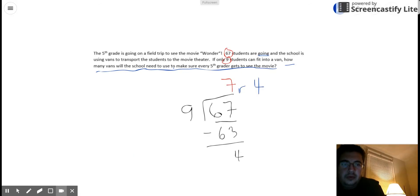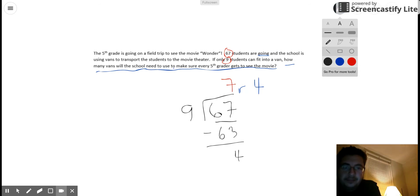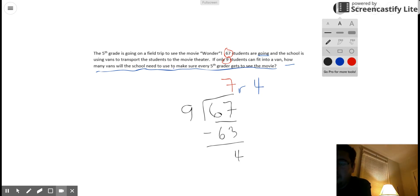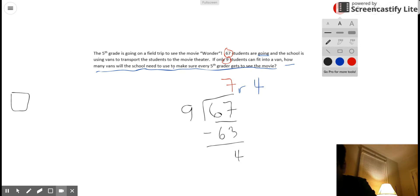So I'm going to draw a picture to the side here that hopefully helps us understand how we can interpret this 7 remainder 4 and help us answer this question of how many vans we need. So I'm going to draw a rectangle, and that rectangle is going to represent a van. So you're going to have to use some imagination. So each van can hold 9 students. So I have 1 van, and that holds 9 students.